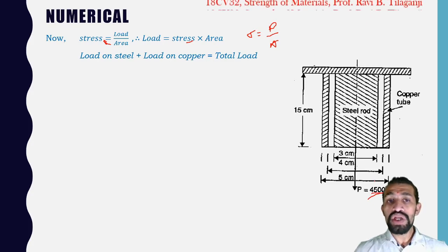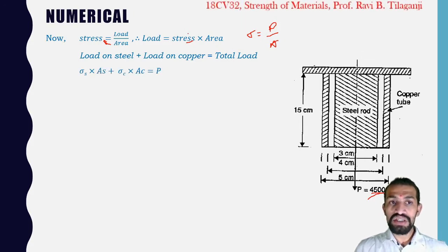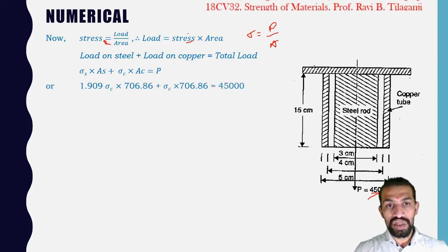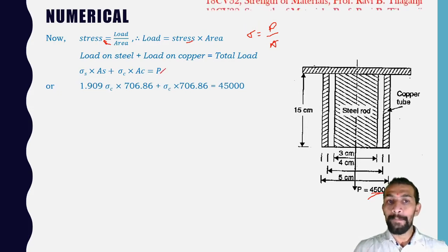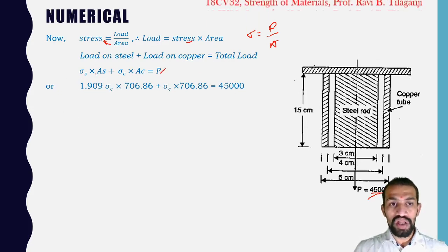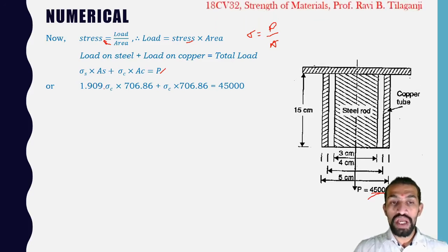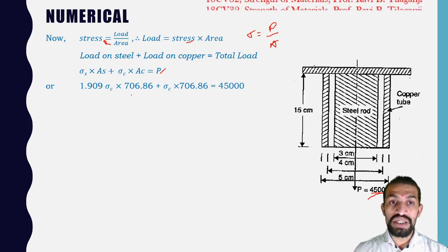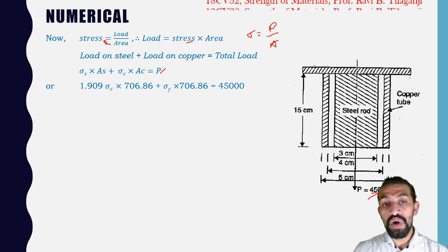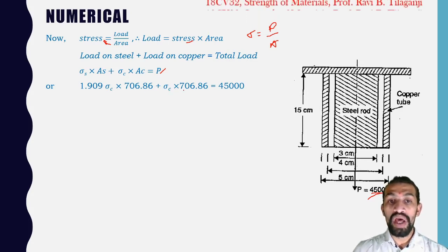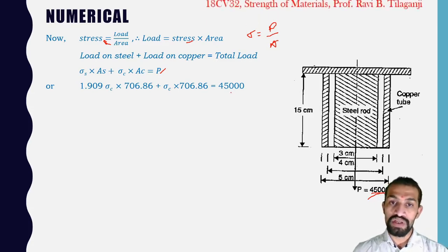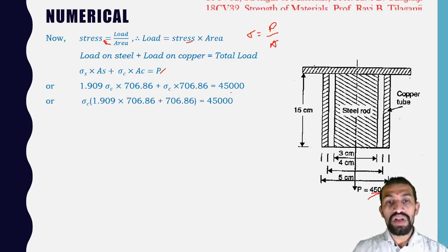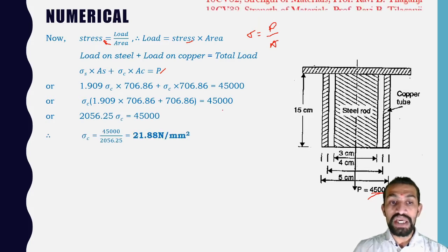Substituting: 1.909 σC × 706.86 + σC × 706.86 = 45,000. Solving gives σC = 21.88 N/mm².